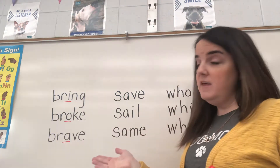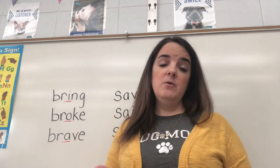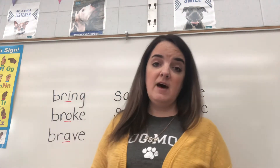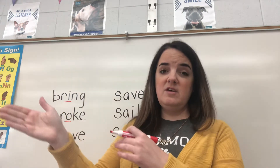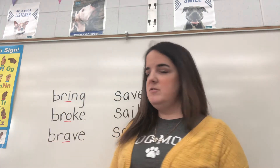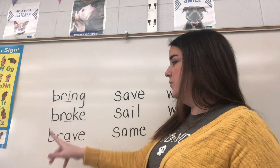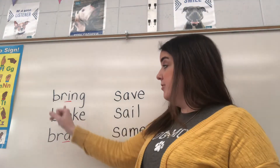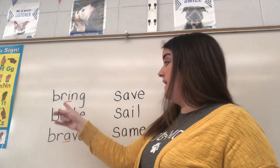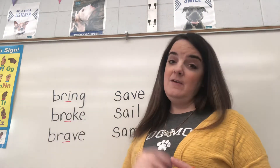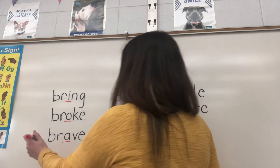Now, looking at the third letter in each word, we're going to figure out which letter comes first. We're going to start at the beginning of the alphabet with letter A and work our way all the way to letter Z if possible. I have an I, I have a letter O, and the letter A. Out of all three of those letters, which one comes first — I, O, or A? If you answered A, you are correct. So my word that would go first would be the word brave.